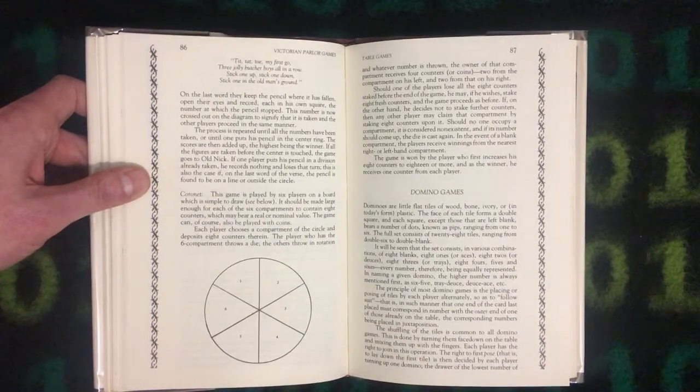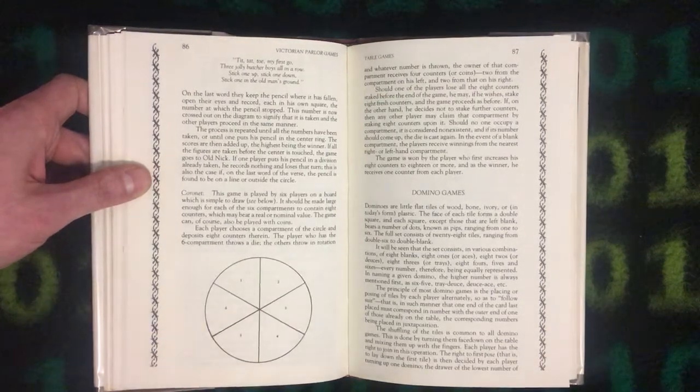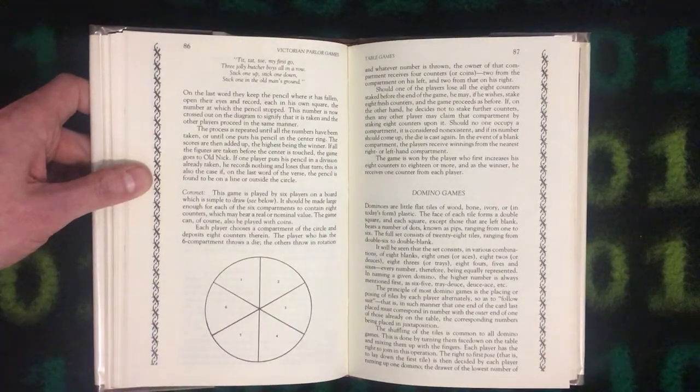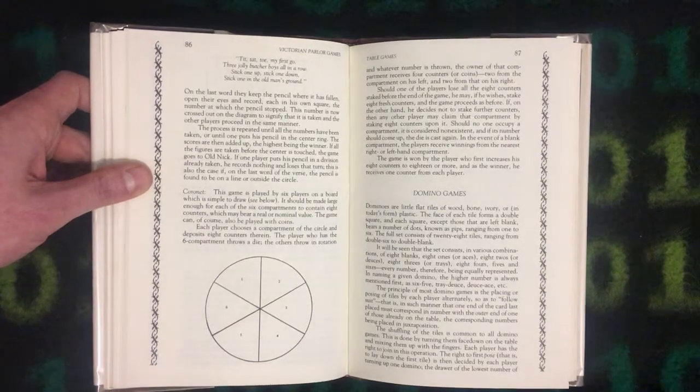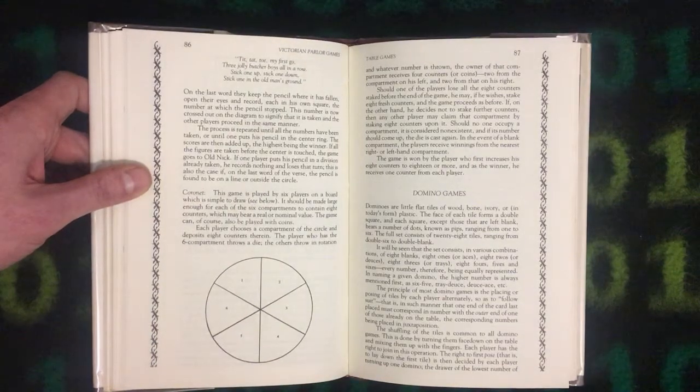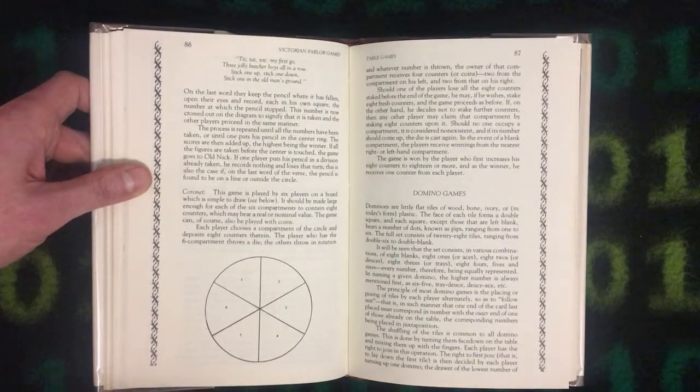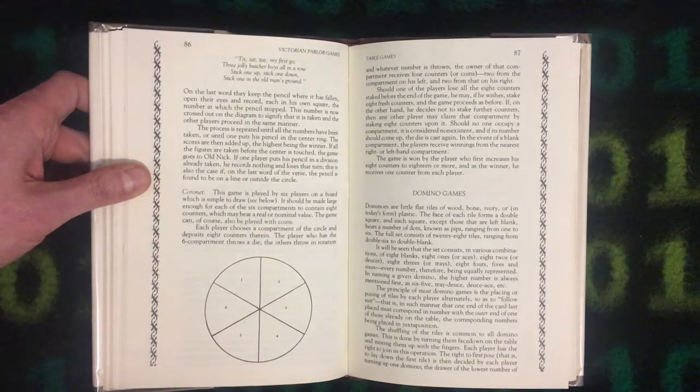This game is played by six players on a board which is simple to draw. It should be made large enough for each of the six compartments to contain eight counters, which may bear a real or nominal value. The game can, of course, also be played with coins. Each player chooses a compartment of the circle and deposits eight counters therein.